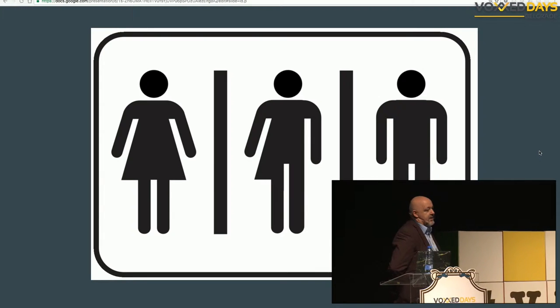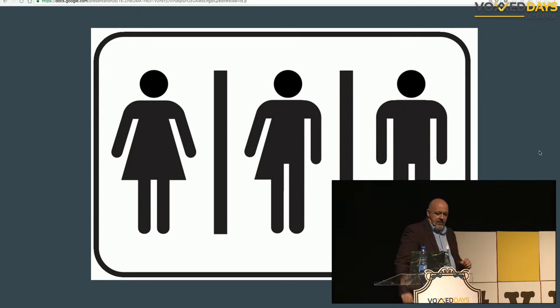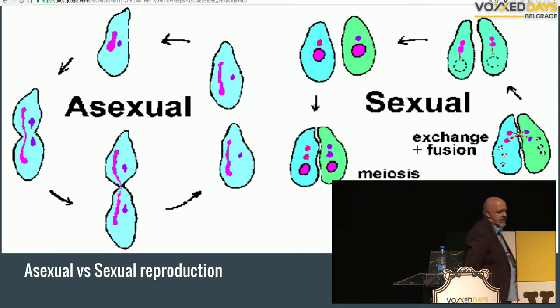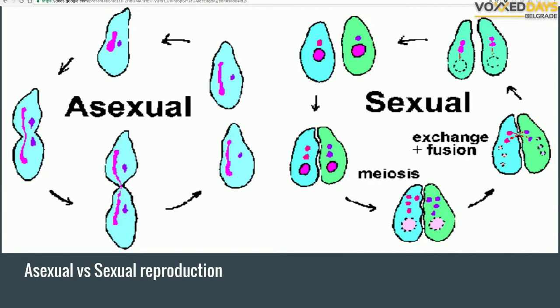For life, reproduction is the most important thing, and it was introduced like a million years ago. There are some theories about it, and yes, sex is still a very debatable topic. If you don't recall that process, I picked one slide to recall your memory from elementary school. Previously there was just asexual reproduction — you divide a cell into new beings. This new concept introduces male and female cells that have to combine their genomes and produce new life forms.